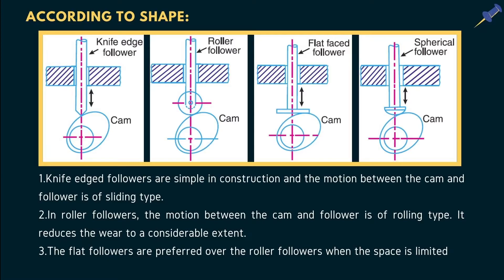The knife edge follower has a sharp edge point of contact with the cam. It is the simplest follower in construction but is not suitable for precision applications where timing is critical. It is mostly used in paper cutting operations. The flat face follower, also called mushroom follower, has a flat surface in contact with the cam and can be used in precision applications.